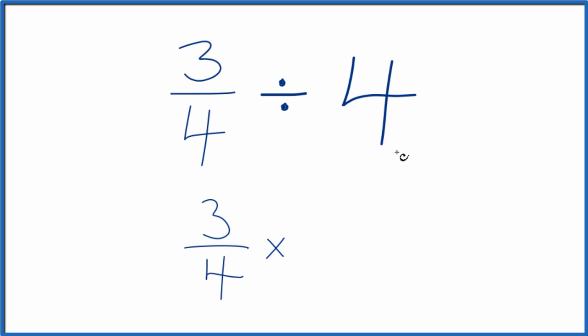So it's helpful to think of four as four over one. We're just dividing by one. It's still four, but now we can do the reciprocal.